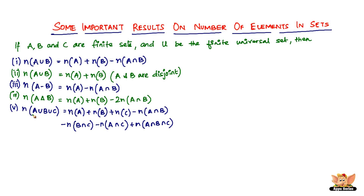The next result is N of A union B union C, which equals N of A plus N of B plus N of C minus N of A intersection B minus N of A intersection C minus N of B intersection C plus N of A intersection B intersection C.